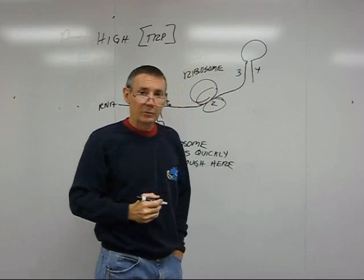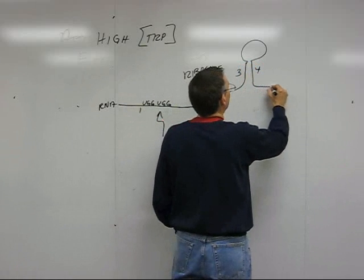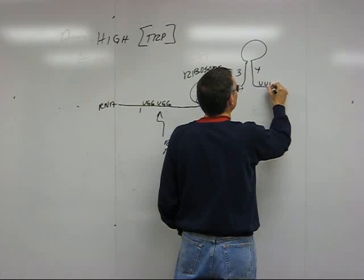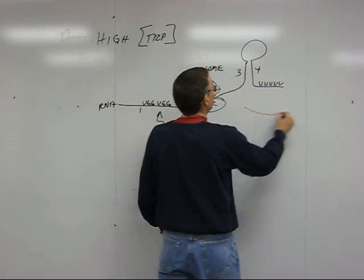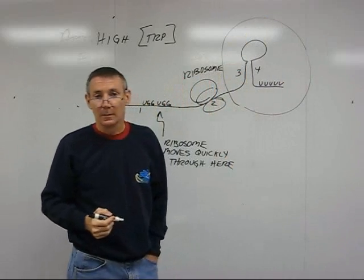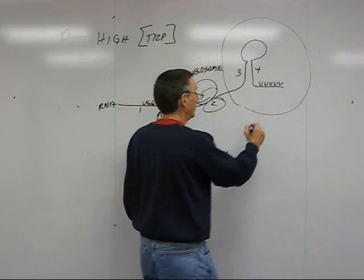Now, regions 3 and 4 are followed by a series of U's in the RNA. So here's an intrinsic terminator of transcription.